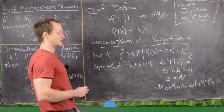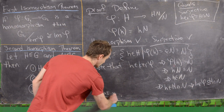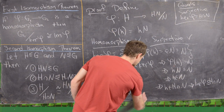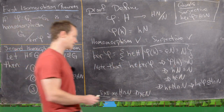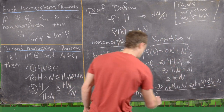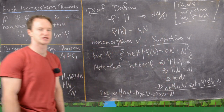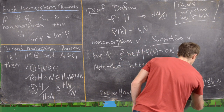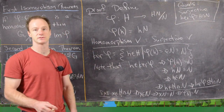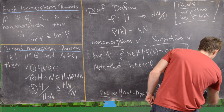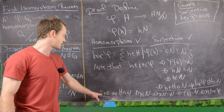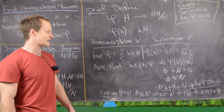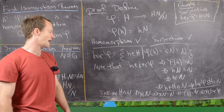For the other inclusion, suppose x is in H∩N. Then x is in N, so the coset xN = N. That means φ(x) = xN = N, which is the identity in the quotient group. So x is in ker(φ). Therefore H∩N ⊆ ker(φ), and combining both inclusions we get ker(φ) = H∩N.